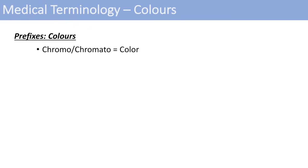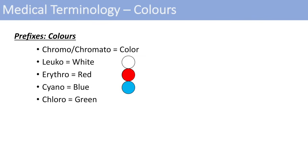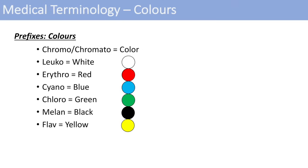The next group of prefixes is colors. The prefix for color itself is chromo or chromato. Leuco means white. Erythro means red. Cyano is blue. Chloro is green. Melan or melano is black — so think of melanoma. And flav means yellow, which you very rarely hear. You may have heard of leukocyte for white, erythrocytes for red blood cells, cyanosis when you become hypoxic and turn blue, and chlorophyll in plants making them look green.